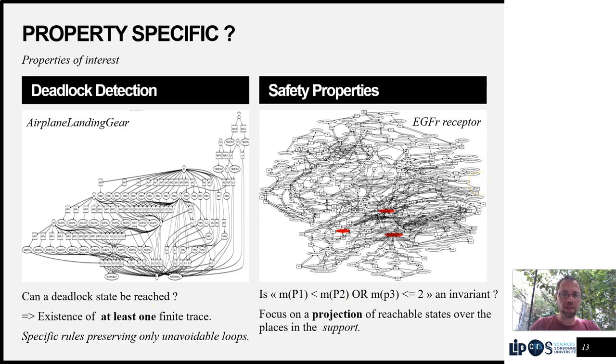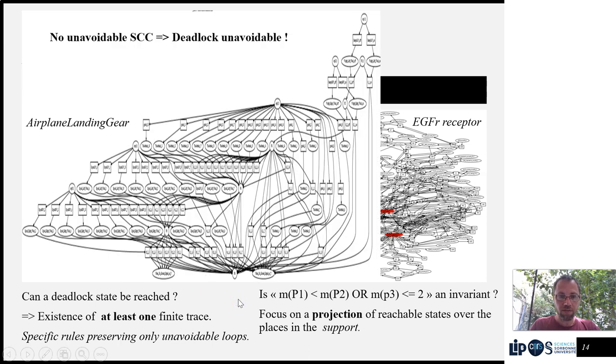The reduction rules we define are property-specific. On the left, the only way to avoid a deadlock would be if there is an infinite loop in which tokens get inevitably caught, but just looking at the structure of the net, we can see here there are no SSEs. Therefore, a deadlock is actually unavoidable.